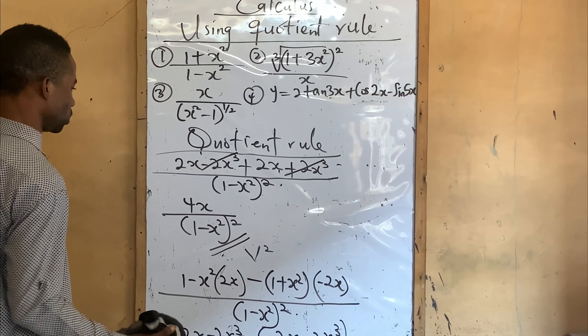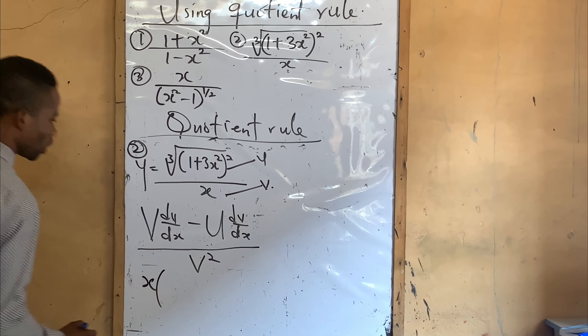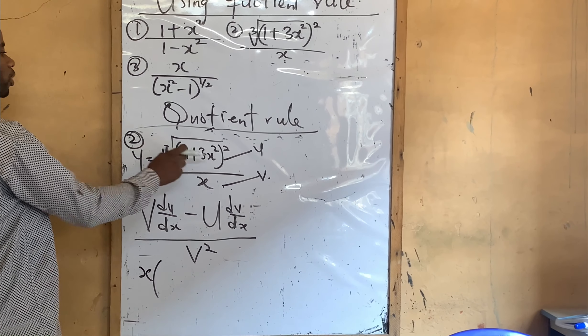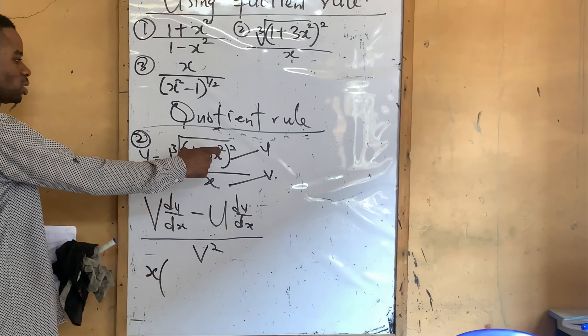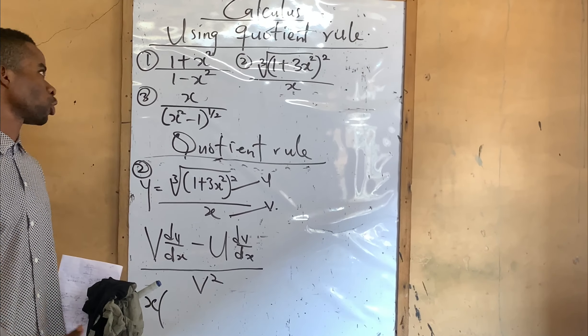Now let us do number 2. We want to differentiate the cube root of (1 plus 3x squared) over x. This is our u, and x is our v. According to our quotient rule formula: v·(du/dx) minus u·(dv/dx), all over v squared. The work comes in differentiating u using function of a function, or chain rule.